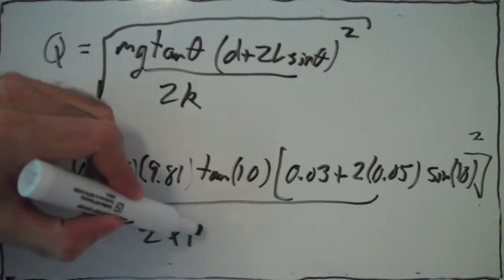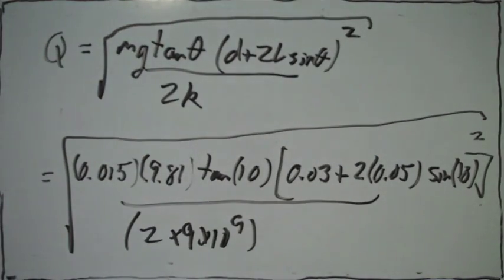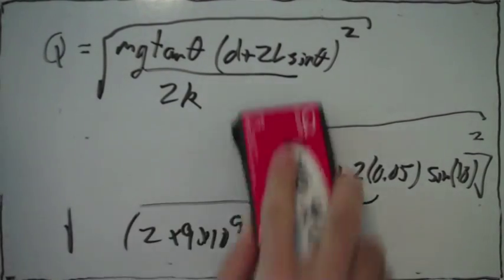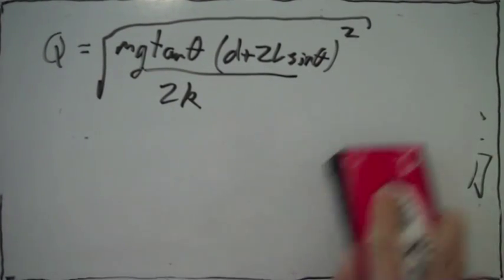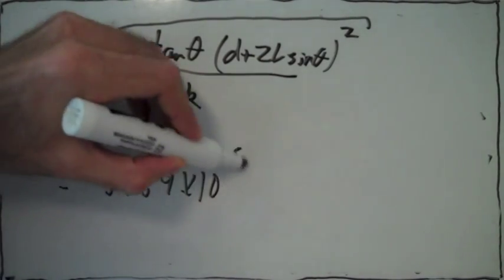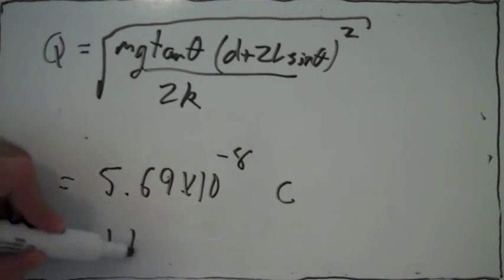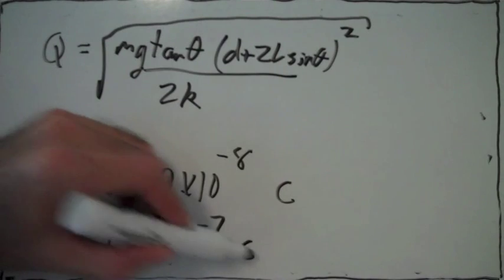The constant k is 9 times 10 to the 9. So we just calculate, we multiply all these numbers out, and we calculate what q is. Now it's just a matter of plugging into a calculator, and we get the following number. Q is equal to this, this many coulombs. So one of the charges has a charge of that, and the other charge has twice as much charge, which is this much.